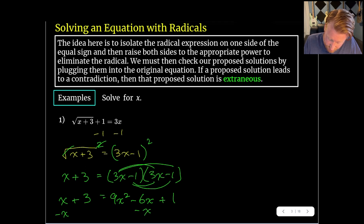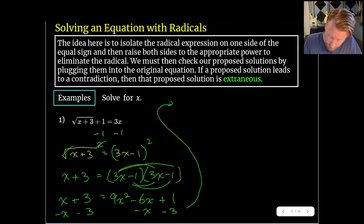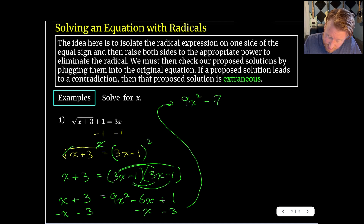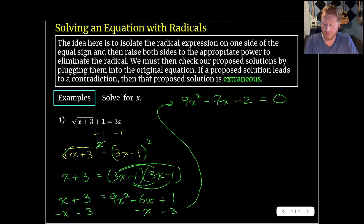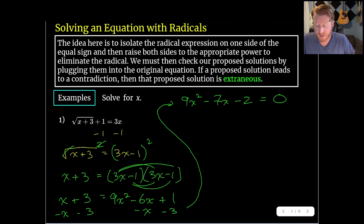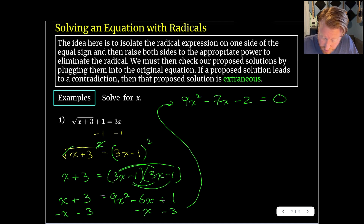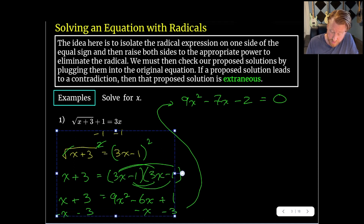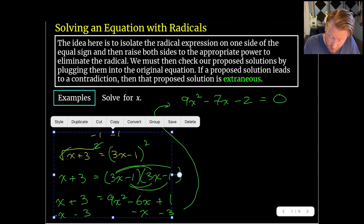To solve quadratic equations we need them equal to 0, so I'll subtract x from both sides and subtract 3 from both sides, giving us 9x squared minus 7x minus 2 equals 0. Now we definitely have a quadratic equal to 0. Let me erase the left hand side work to give us space to factor.